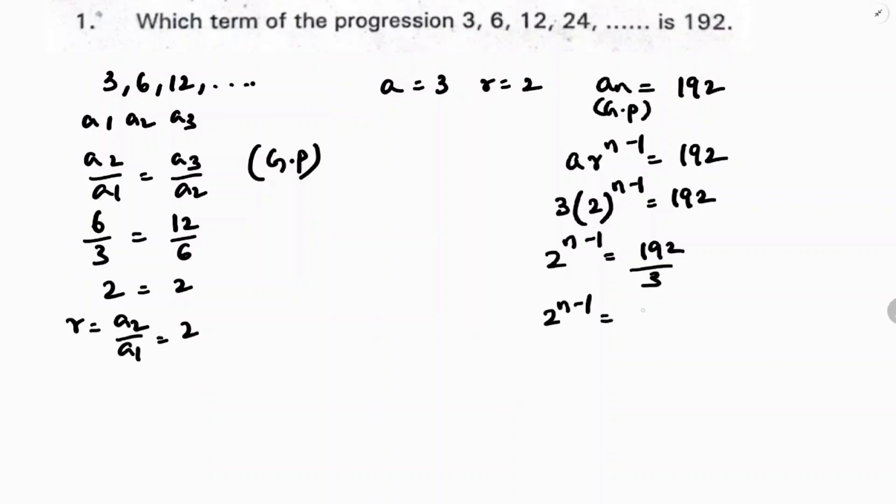2 to the power n minus 1 equals 192 by 3, so 2 to the power n minus 1 equals 64.